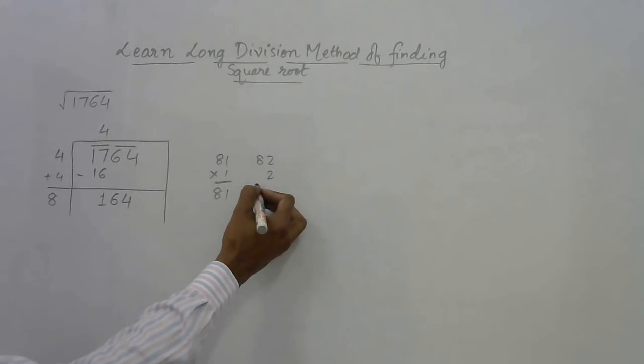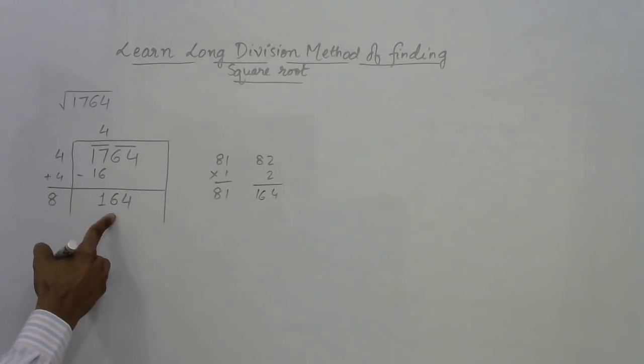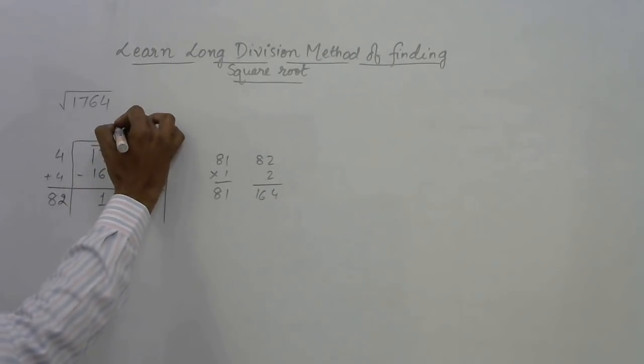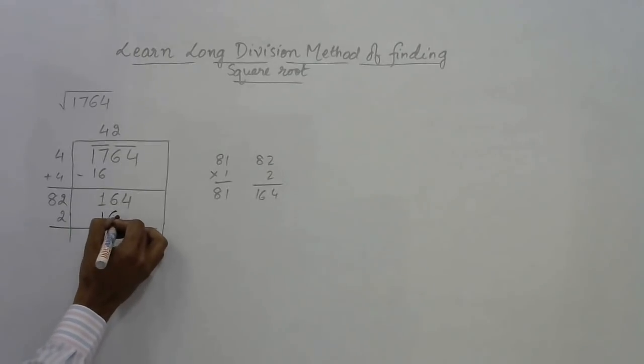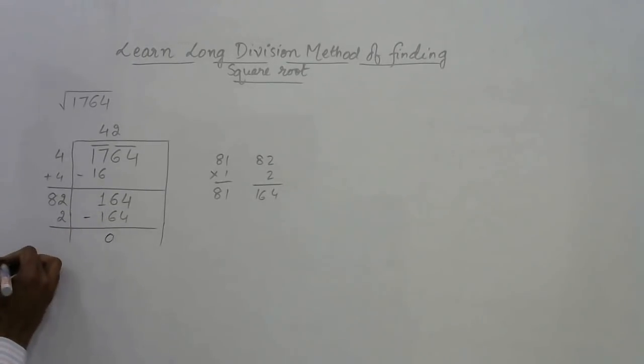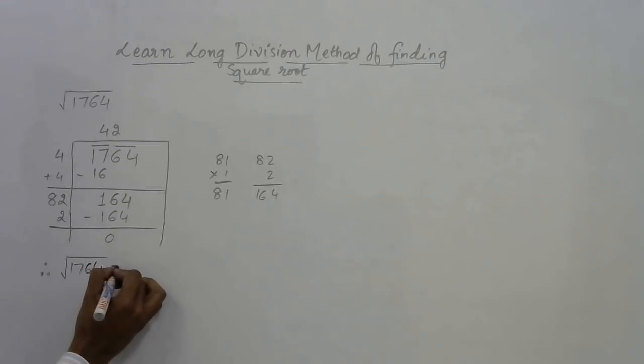What about 82 into 2? This number has to be the same: 82 into 2 is 164, which is exactly the same. So 2 comes in the answer, and 82 into 2 gives 164. When subtracted, this gives 0 and the process terminates. Therefore, square root of 1764 is 42.